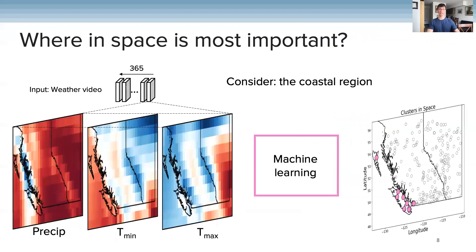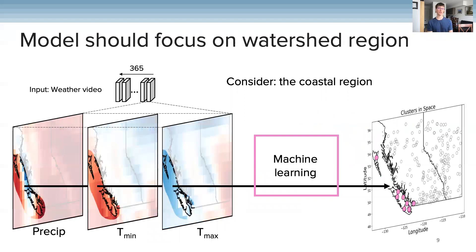With this model, we can then ask where in space is most important. Consider now just the coastal region. We might expect that since streamflow in this region is driven by rainfall along the west coast, the model should be mapping the weather along the west coast to streamflow along the west coast.